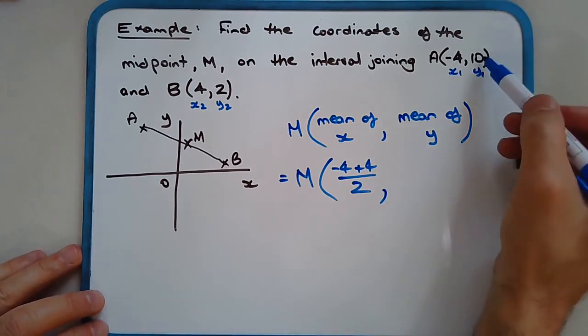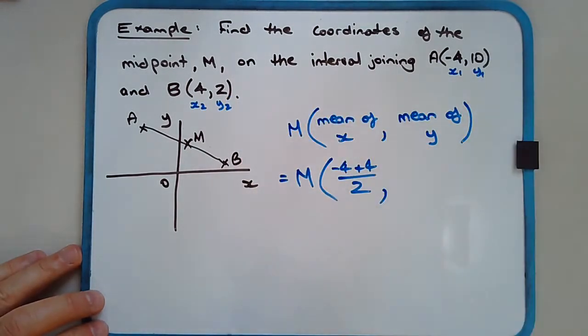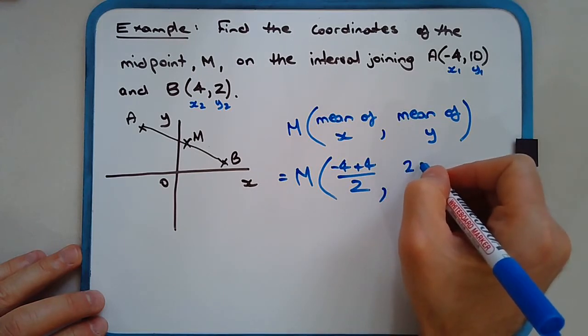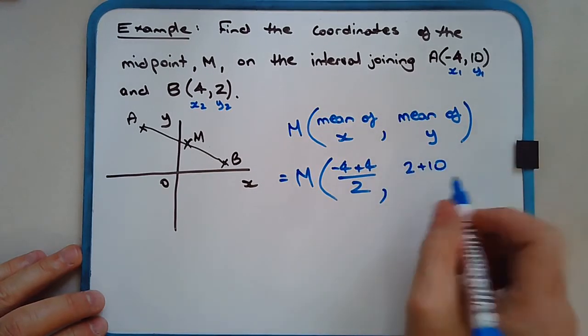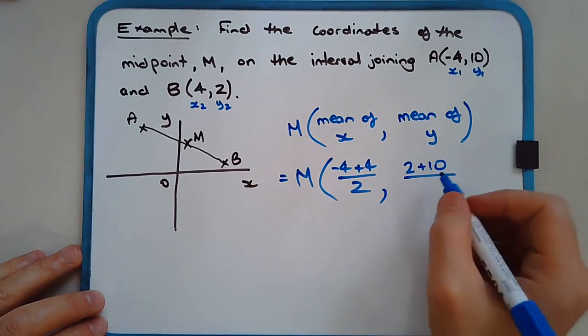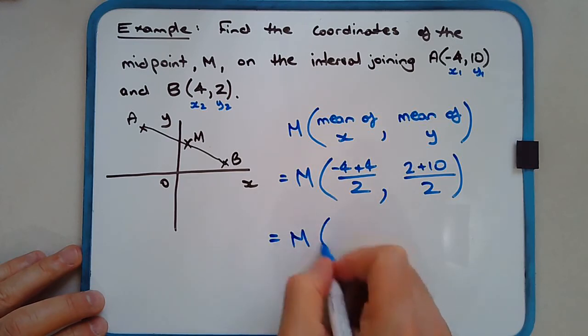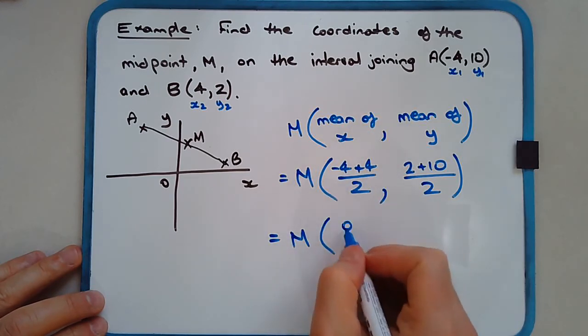Actually doesn't really matter which order you do that. And that's equal to M: (-4 + 4), kind of handy there, 0 divided by 2, and (2 + 10) over 2, so that's 12 divided by 2.